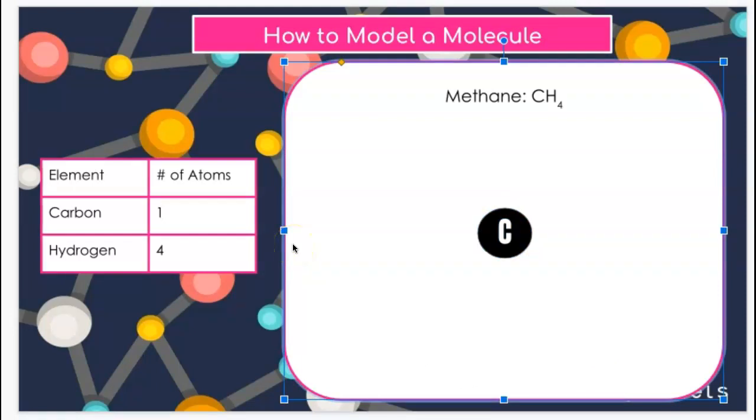And now we have the first atom in our molecular model. Next, I can see that I have four hydrogens that are going to be bonded to this carbon. So now I will need to add in the chemical bonds that we know attach the atoms in any molecule. So I will go ahead and add four bonds to this carbon to make space for the attachment of our hydrogen.